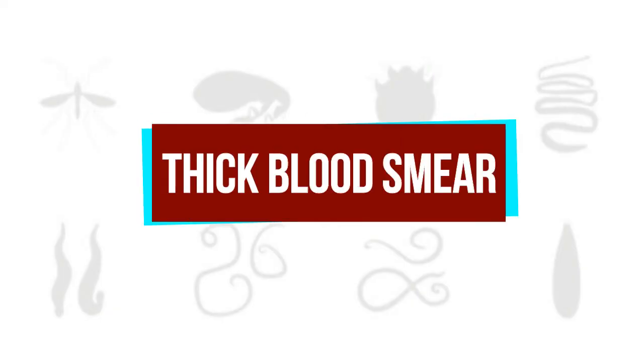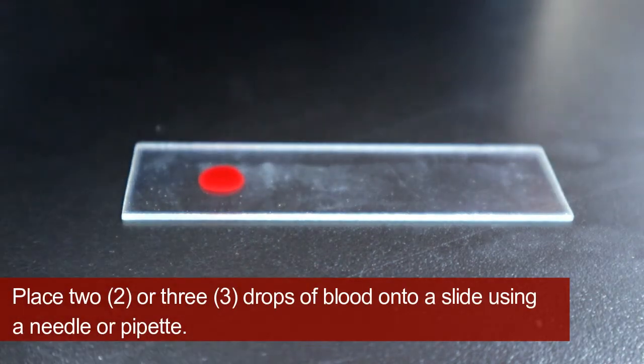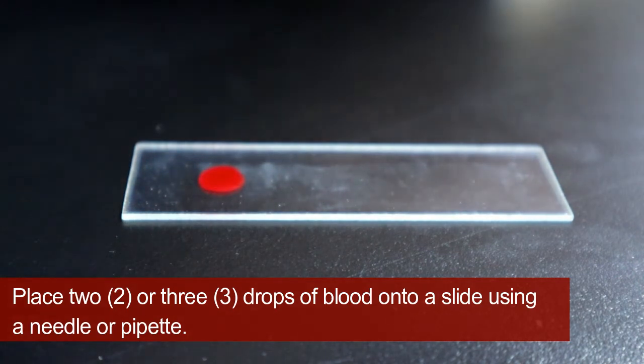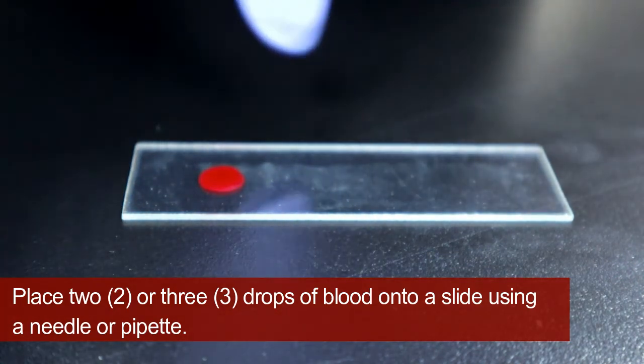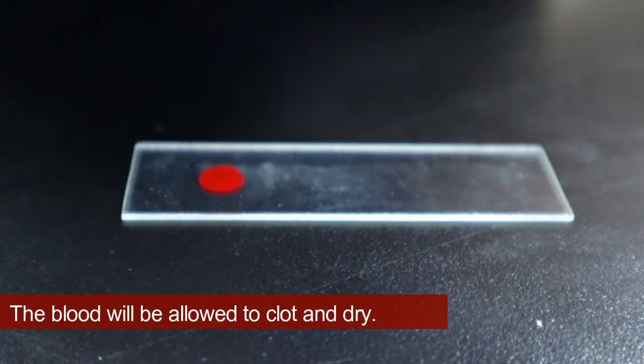Thick blood smear. Place 2 to 3 drops of blood onto a slide using a needle or pipette. The blood will be allowed to clot and dry.